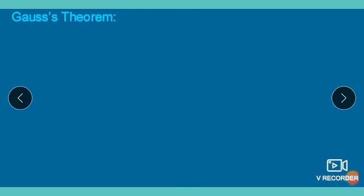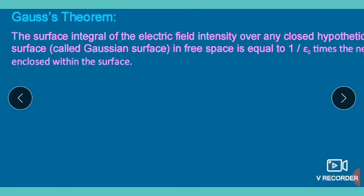Next, Gauss's theorem. Gauss's theorem states that the total flux enclosed by any Gaussian surface is equivalent to one by epsilon (1/ε) times the charge enclosed by that Gaussian surface. The Gaussian surface is an imaginary surface of any arbitrary shape — it may not be a regular shape. It is simply a hypothetical closed surface called the Gaussian surface.